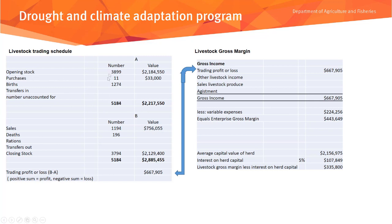The livestock trading schedule reconciles, taking into account opening and closing stock, purchases, births, deaths, rations, and sales. We value the opening stock at a market, trading, or property value, cost the purchases, and include closing stock value for anything born that wasn't sold. Our trading profit or loss is the total of Part B minus the total of Part A — in this example, $667,000. A positive sum equals a profit; a negative sum equals a loss.